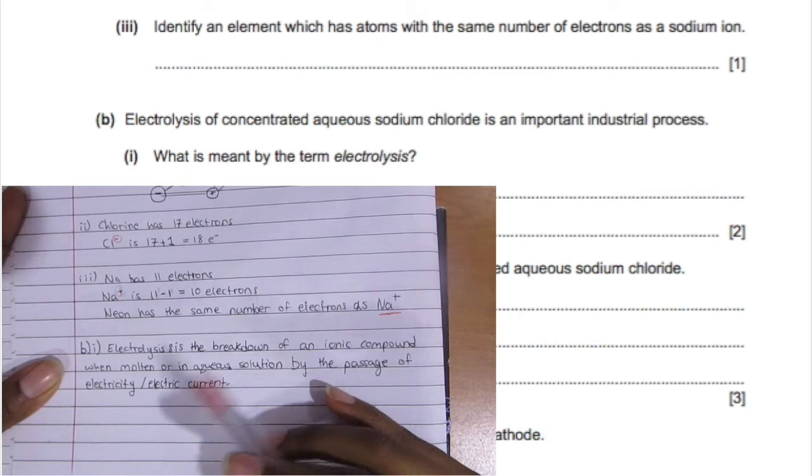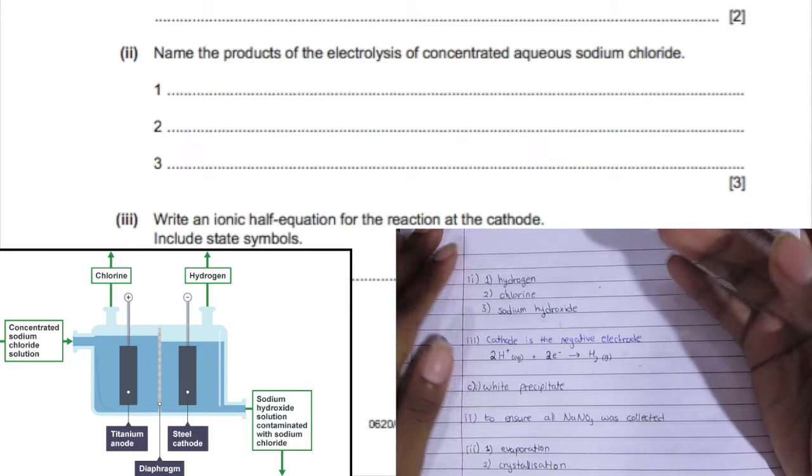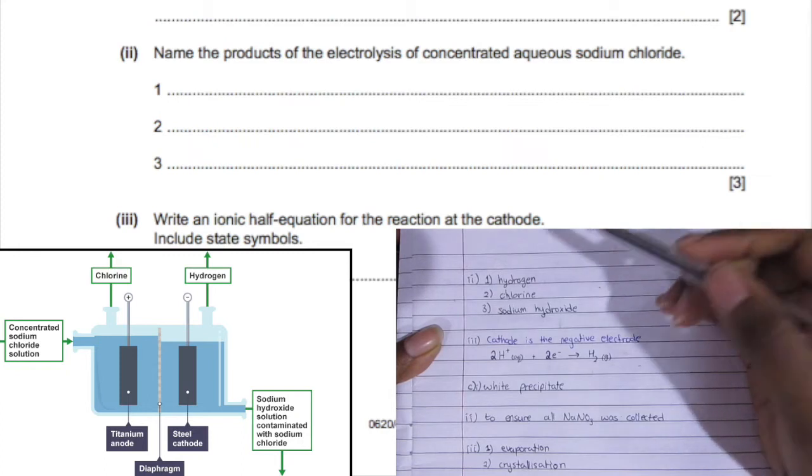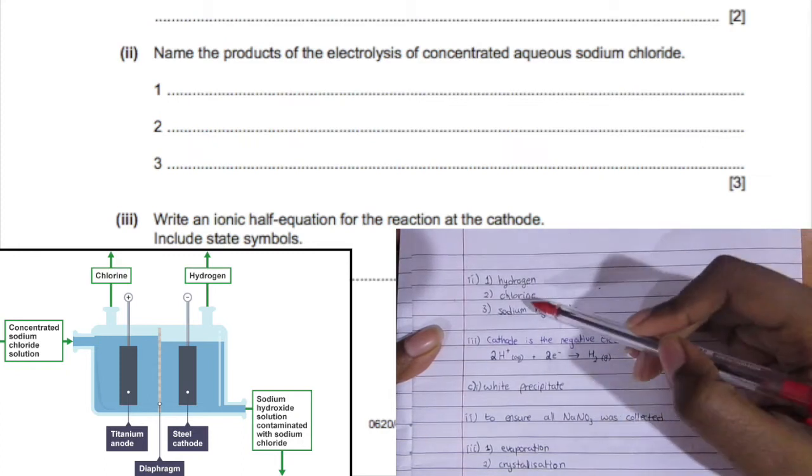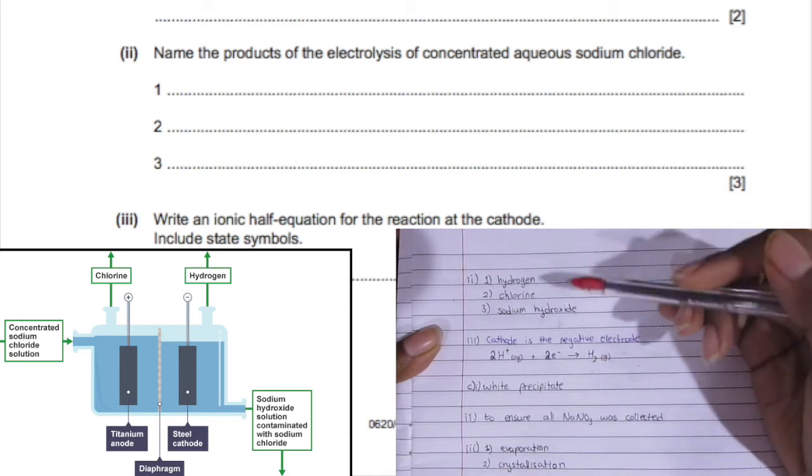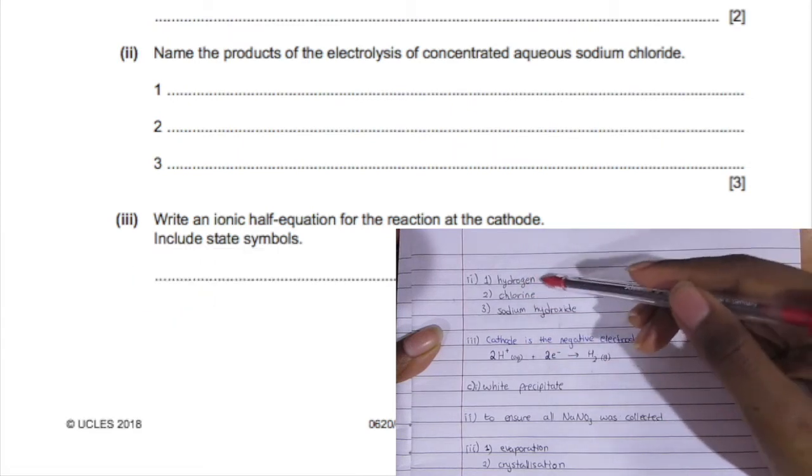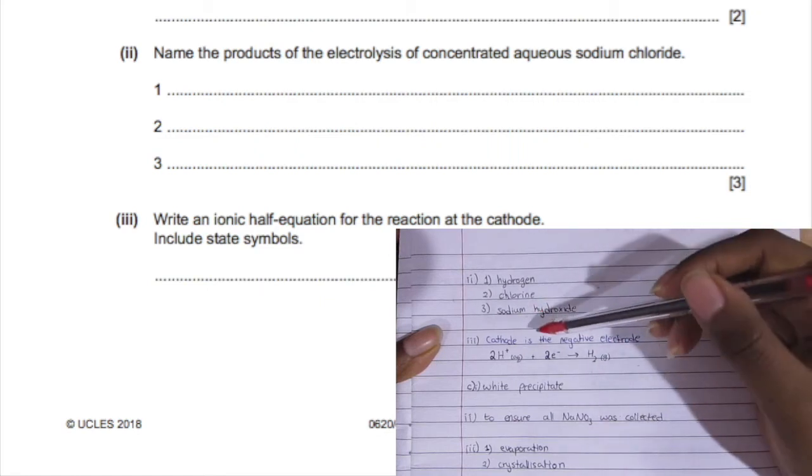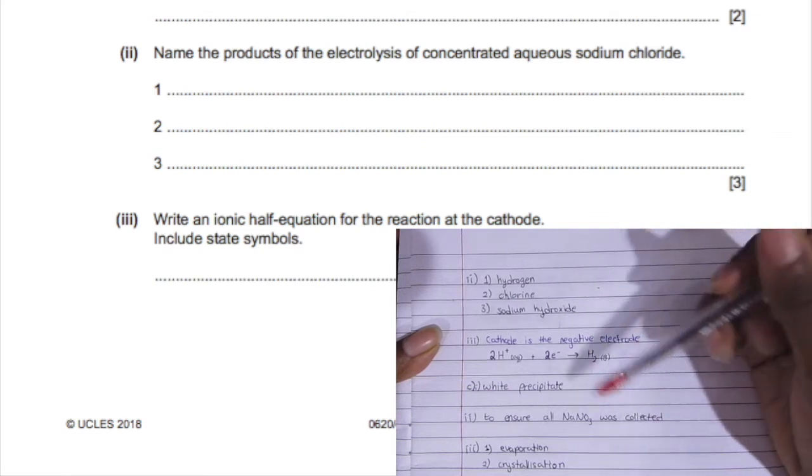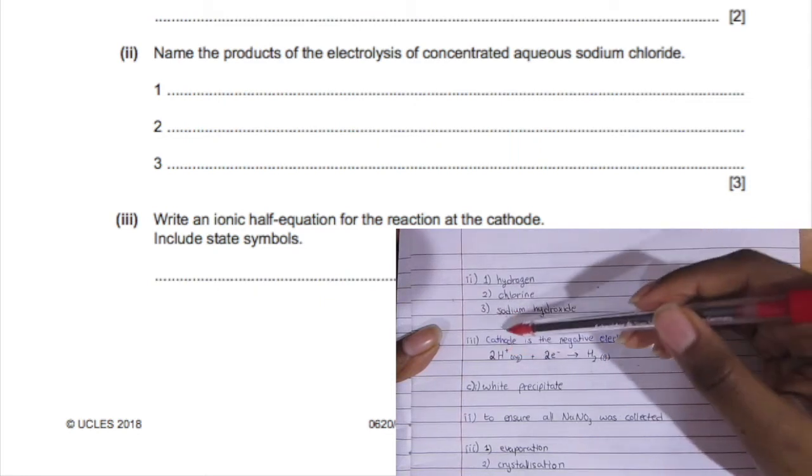We're asked to find the three products produced when electrolyzing aqueous sodium chloride. This is brine. When sodium chloride is dissolved in water, its ions separate and can conduct electricity. Hydrogen is given off and used to make ammonia. Chlorine gas is given off at the anode, which is the positive electrode, and it's used to disinfect swimming pools. The sodium hydroxide that ends up combining is left in the solution and is used to make soap and clean ovens. These are the three things that are produced.